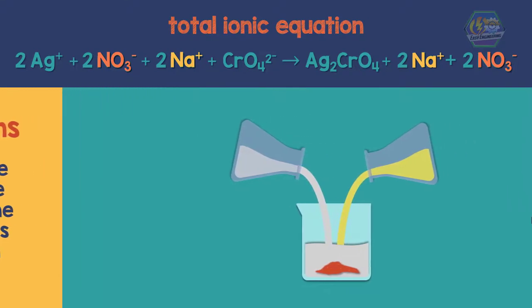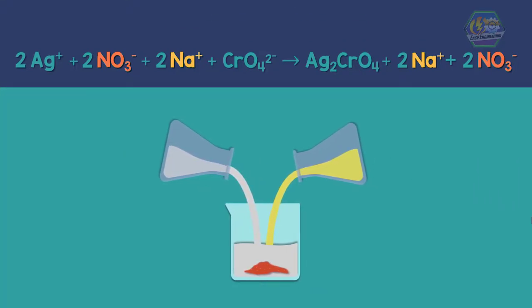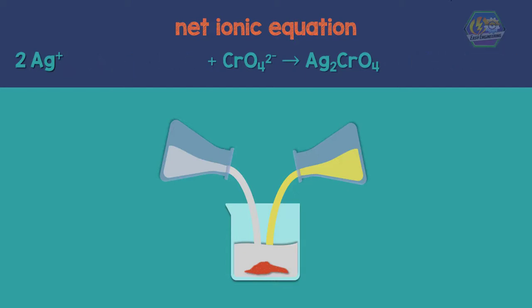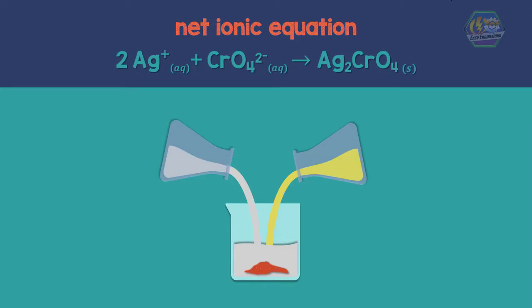Moving on to the last equation, known as the net ionic equation, here we simplify the total ionic equation by eliminating the spectator ions. In the reaction we only see the chemical change, which is the formation of solid silver chromate.